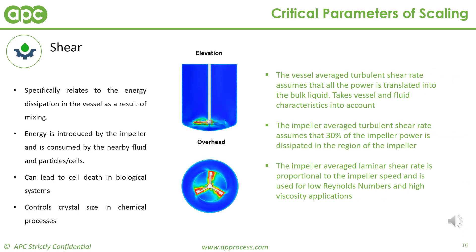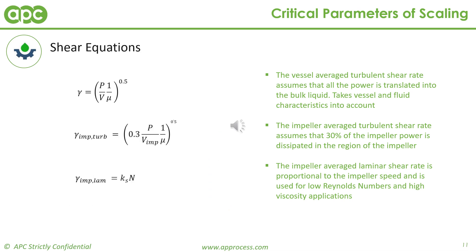Shear specifically relates to the energy dissipation in the vessel as a result of mixing. Energy is introduced by the impeller and is consumed by the nearby fluid and particles, or cells. A high rate of energy dissipation can have a negative impact on particles for biological processes. Shear also controls crystal size for crystallization processes. The vessel average shear and the impeller average shear can be predicted from engineering correlations, where the term of interest is P/V — the power per unit volume. Shear is also a function of the power input into the system.